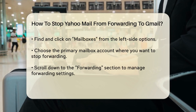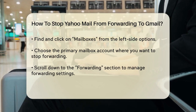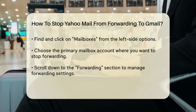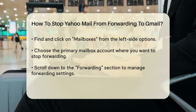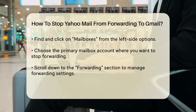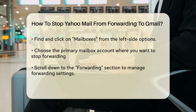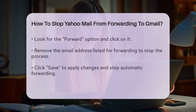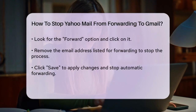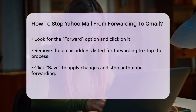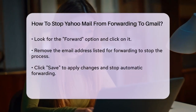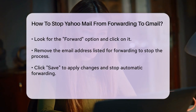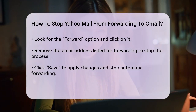In the Mailboxes section, you'll see a list of your email accounts. Select the primary mailbox account for which you want to stop the forwarding. Now scroll down to the forwarding section. Here, you'll find the settings related to automatic email forwarding.